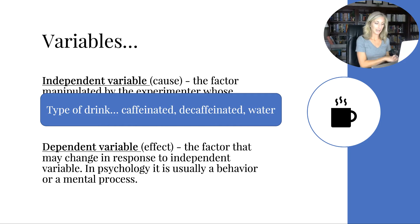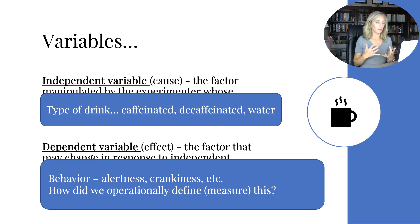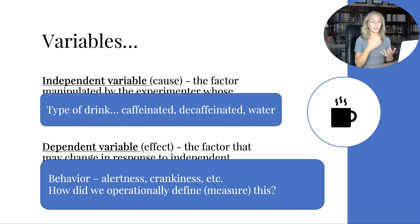The dependent variable is the effect — the factor that may change in response to the independent variable. In psychology, it is usually a behavior or a mental process, like happiness. In our experiment, it's the teachers' behavior: alertness, crankiness, etc. Remember, you have to operationally define your dependent variable — we said we'd give a survey, or if measuring alertness specifically, you could give some kind of test.